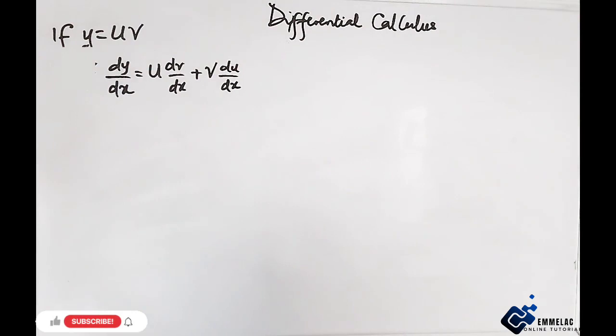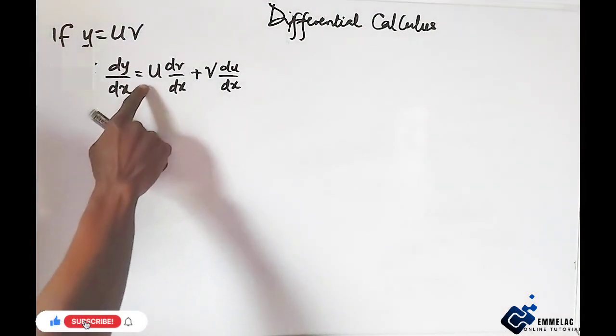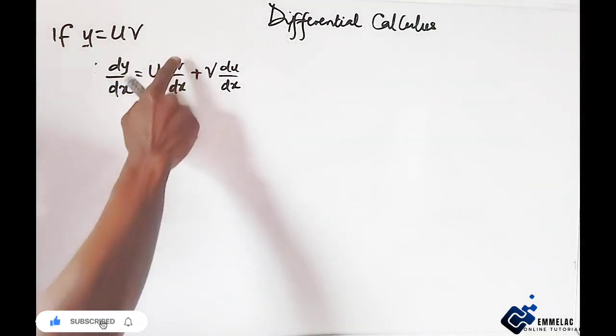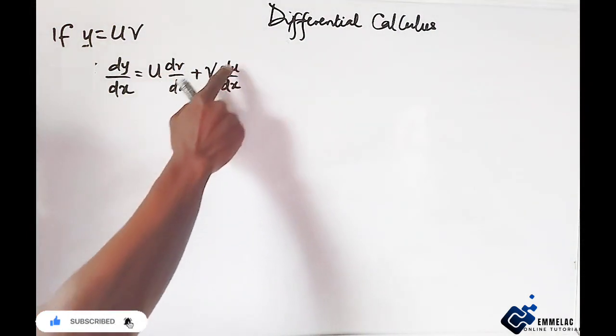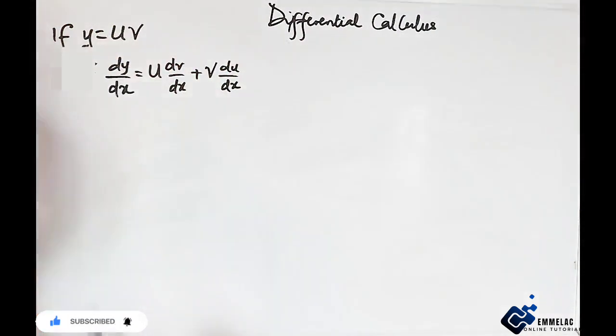Welcome to Emelac online tutorial. In this video we're going to prove that dy/dx equals u dv/dx plus v du/dx from y equals uv. This is called the product rule, and it implies that y is a function of u and v, which are also functions of x.